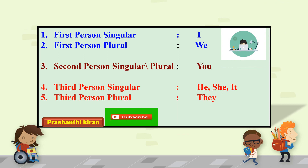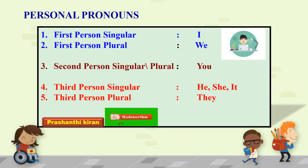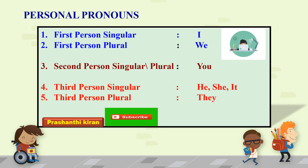Let us learn more about personal pronouns. First person singular: I. First person plural: We. Second person singular and plural: You. Third person singular: He, She, It. Third person plural: They.